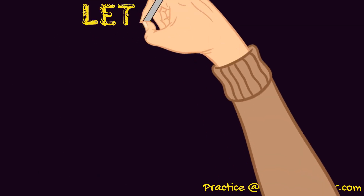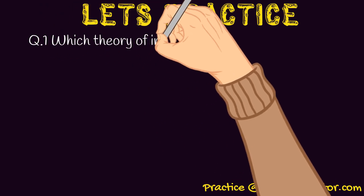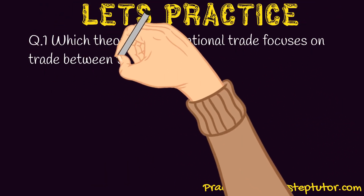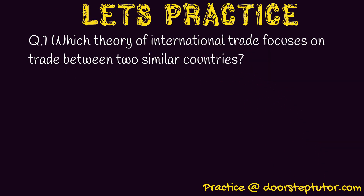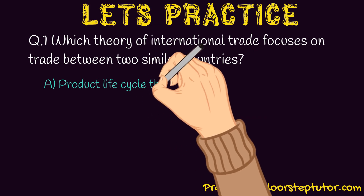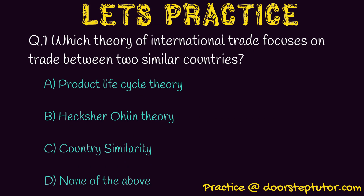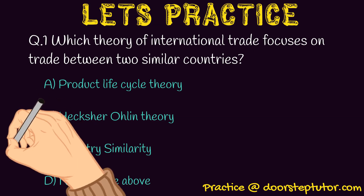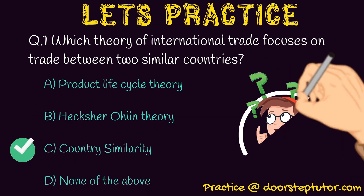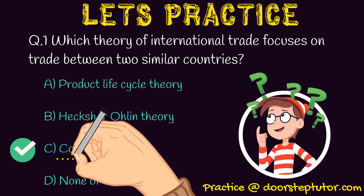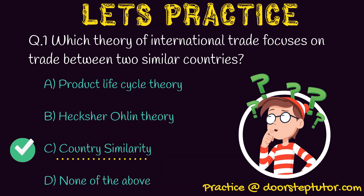Now let us practice some important questions. Which theory of international trade focuses on trade between two similar countries? A. Product Life Cycle Theory. B. Heckscher-Ohlin Theory. C. Country Similarity Theory. D. None of the above. We discussed that when two countries are in similar stages of growth, trade happens between them, and this was basically given in the Country Similarity Theory. So the correct answer is Country Similarity Theory.